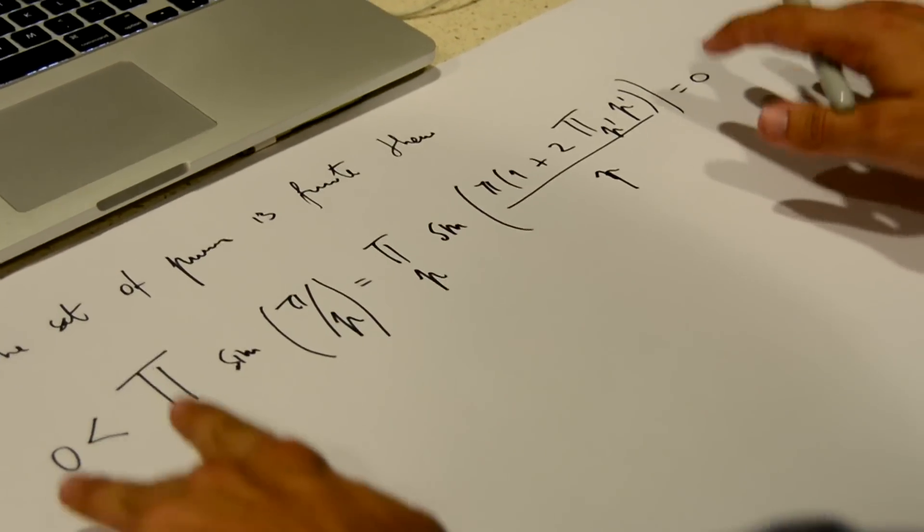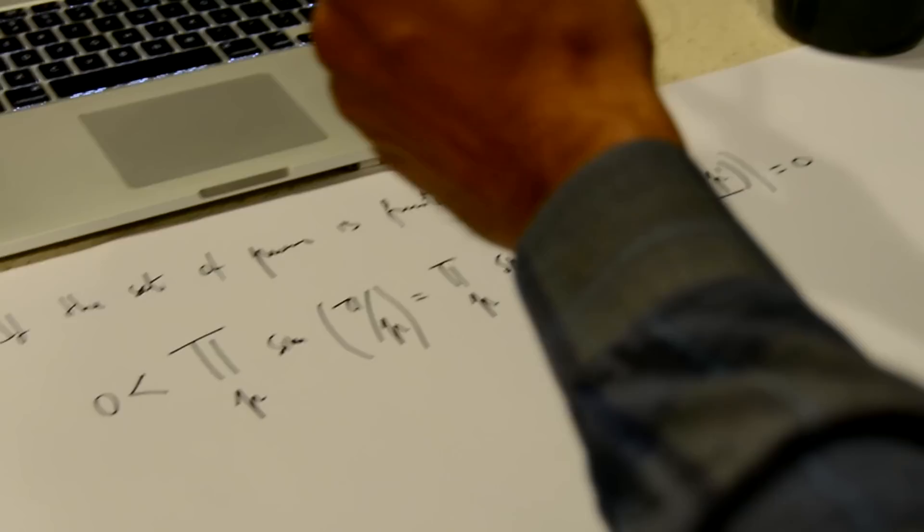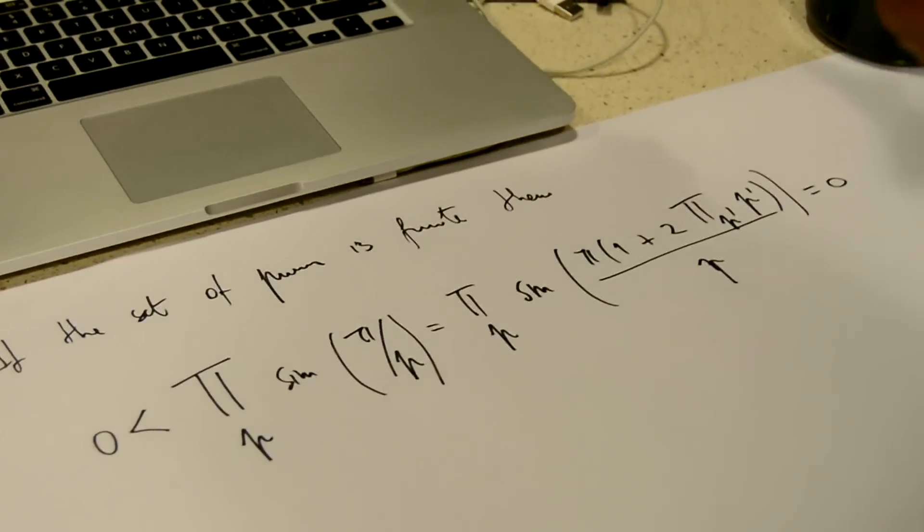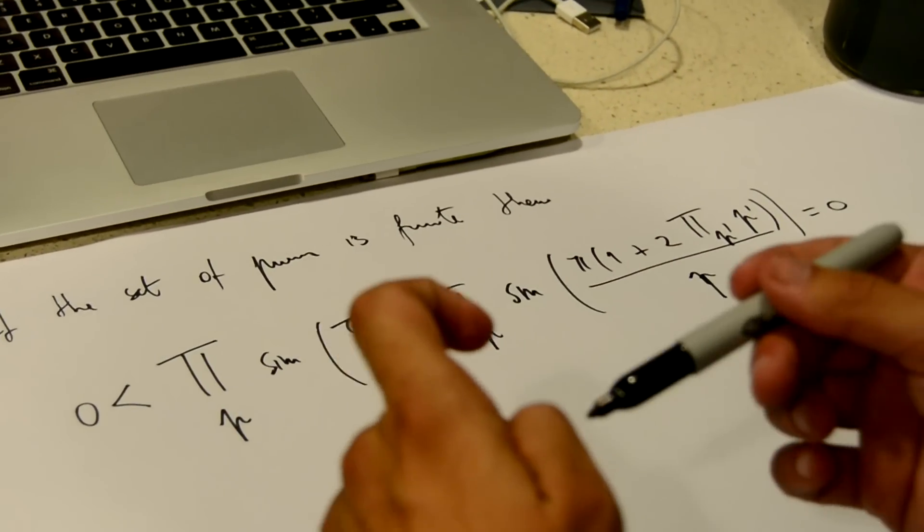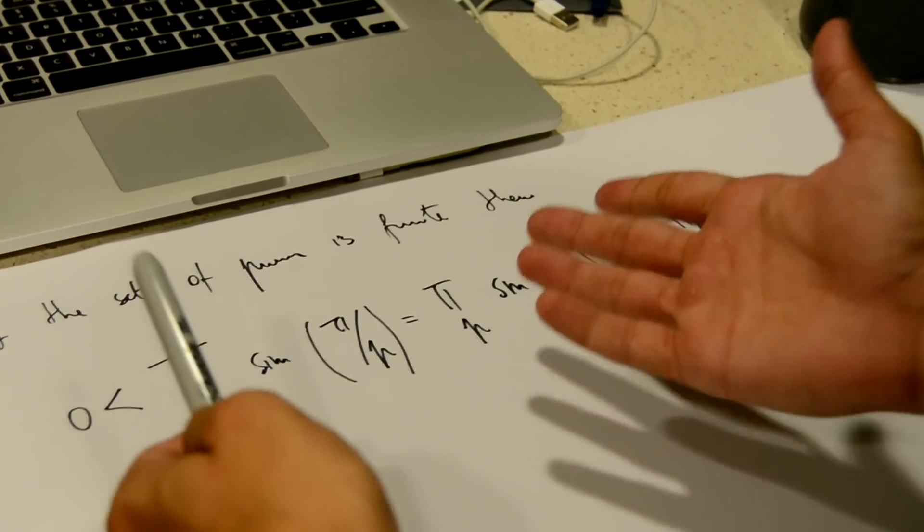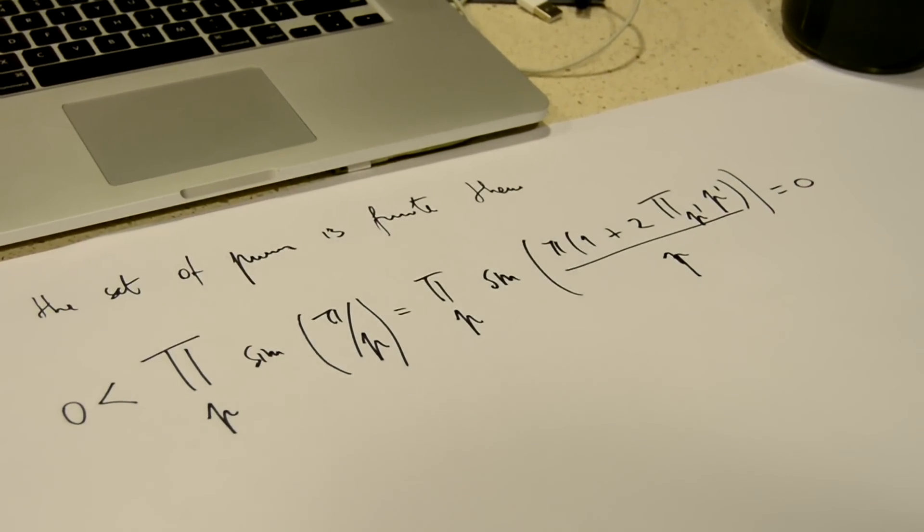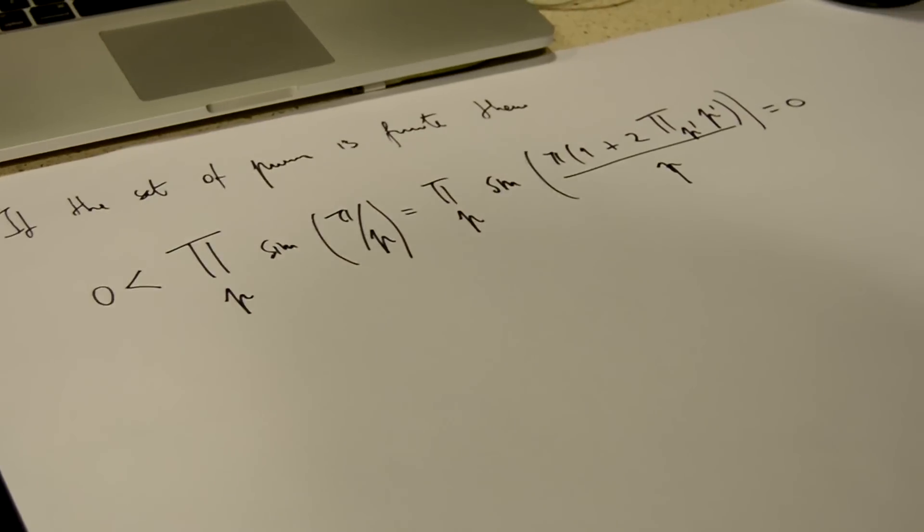So as we can see here, this is a contradiction. We have something that is, at the same time, equal to zero and greater than zero, which means that our initial assumption that the set of all the prime numbers is finite is actually wrong.